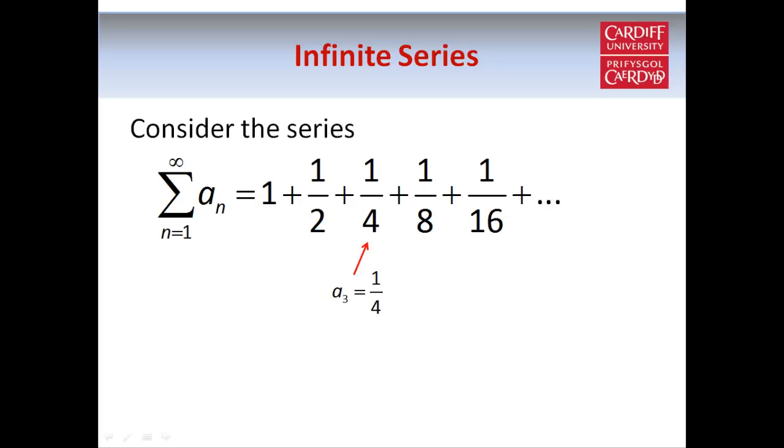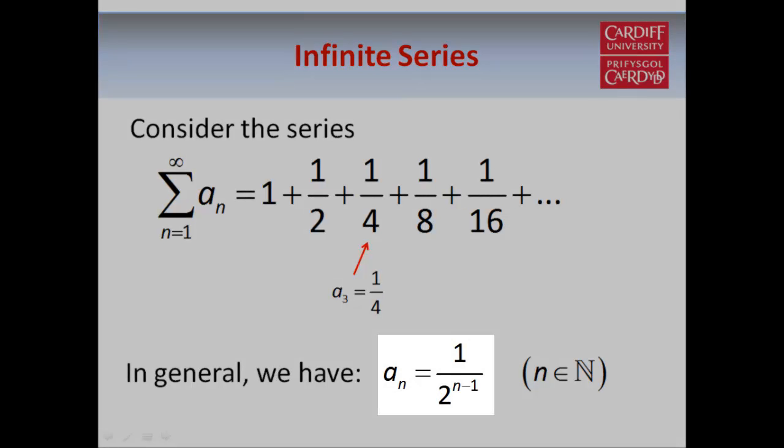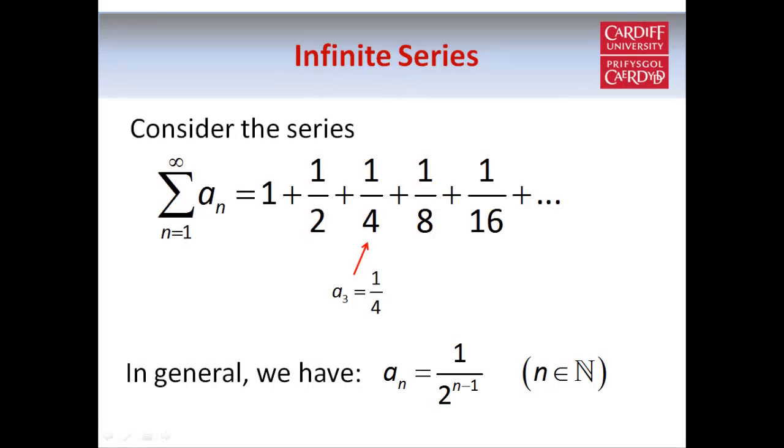And you can see that we do have a pattern in this series. The pattern is that each term from the second term onwards is half of the previous term. So the general rule for the terms in our series is, an equals 1 over 2 to the power n minus 1, for all the natural numbers n.